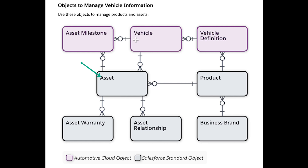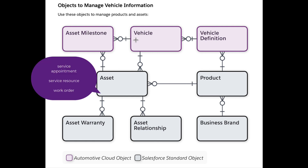Asset is of course part of the core Salesforce data model. As you take a broader view of the automotive data model at large, you'll see that the asset object has relationships already in place with objects like service appointment, the service resource or technician working on a repair job, or a work order that represents a repair or recurring maintenance job.